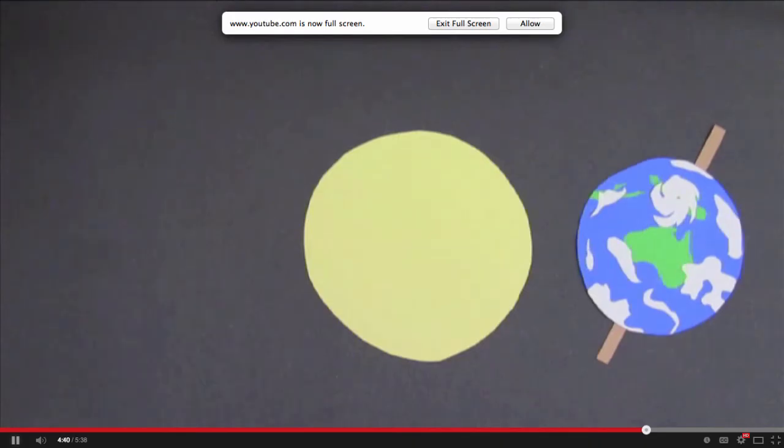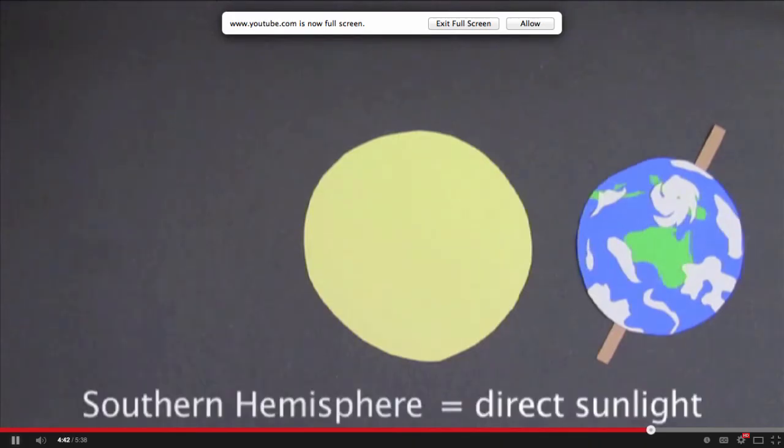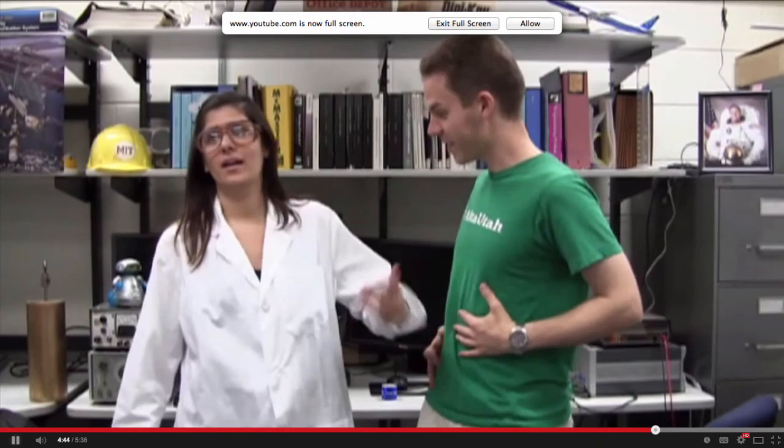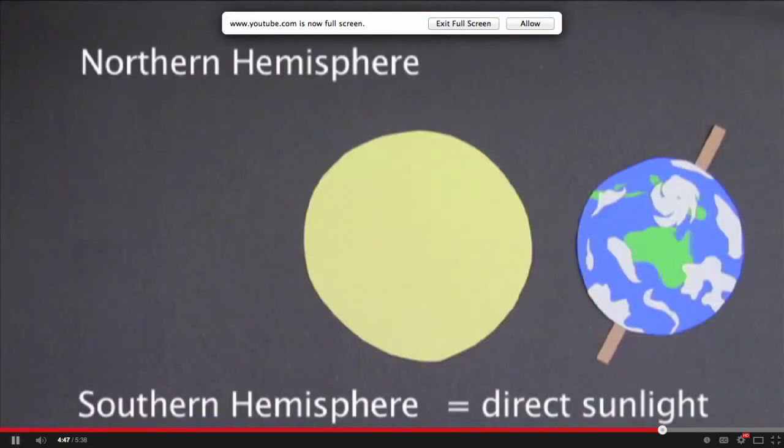Six months later, when the Earth is on the other side of the sun, we have the opposite. It's the southern hemisphere receiving direct sunlight, so it's summer there. And, the northern hemisphere is receiving indirect sunlight, so they're having winter.